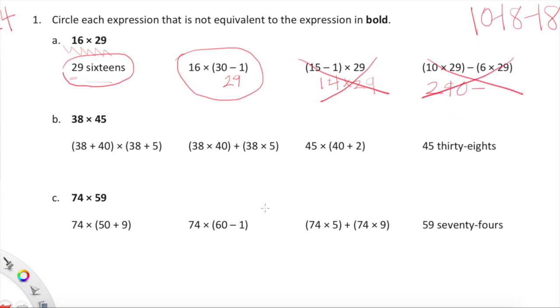Let's look at 74 times 59. 74 times 50 plus 9 is 59, so yes, that works. 74 times 60 minus 1 is 59, so we have 74 times 59, bingo. Here we have 5 copies of 74 and 74 copies of 9—no, that's not going to work. Here we have 59 seventy-fours, or 59 copies of 74, which is the same expression just flipped.